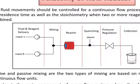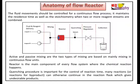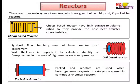Active and passive mixing are the two types of mixing in continuous flow units. Active mixing requires external energy, while passive mixing depends on flow rates proportional to fluid properties. The reactor is the main component of every flow system. Quenching is important for controlling reaction time, as many reactions can otherwise continue and give undesirable products. In packed bed reactors, quenching is not necessary because the reaction stops automatically after removal of reactant from the packed bed.